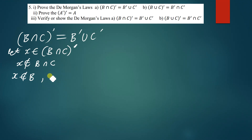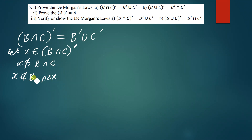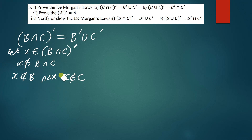When we talk about the complement of any set, we are simply talking about the elements that are not present in that set. So x is not a member of B ∩ C, which implies that x is not a member of B and x is also not a member of C — x is neither a member of B nor a member of C. Since x is not a member of B and not a member of C, we can conclude that x is a member of B'.